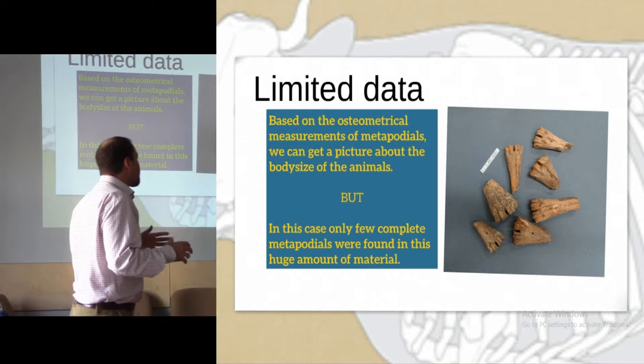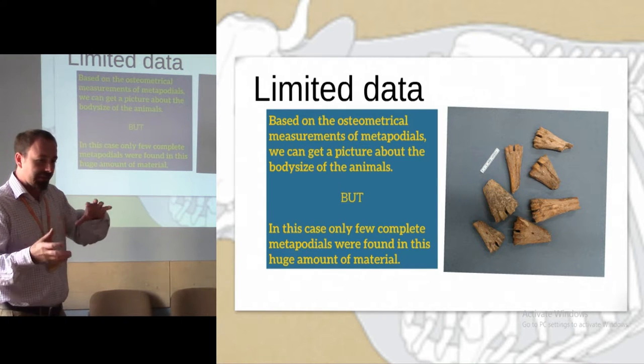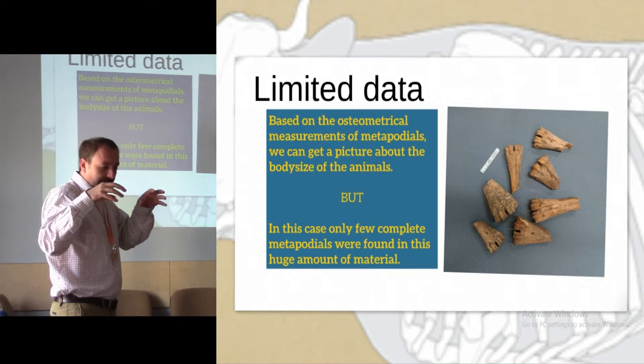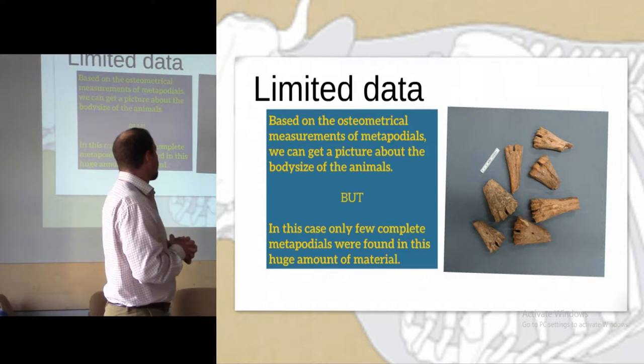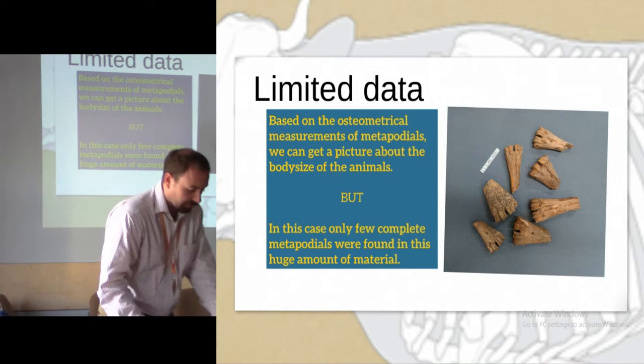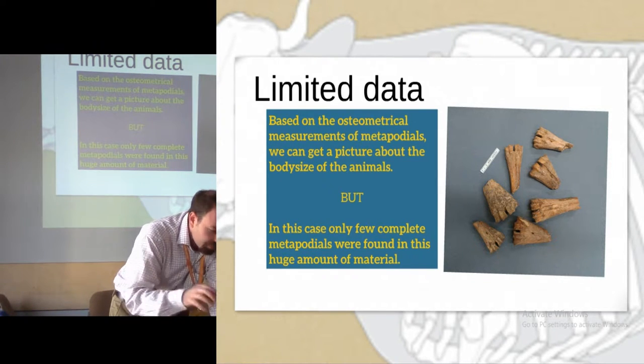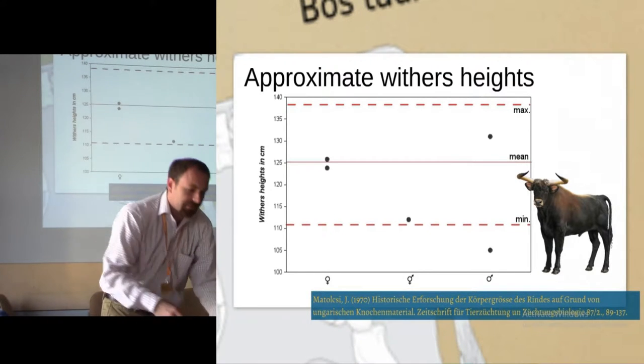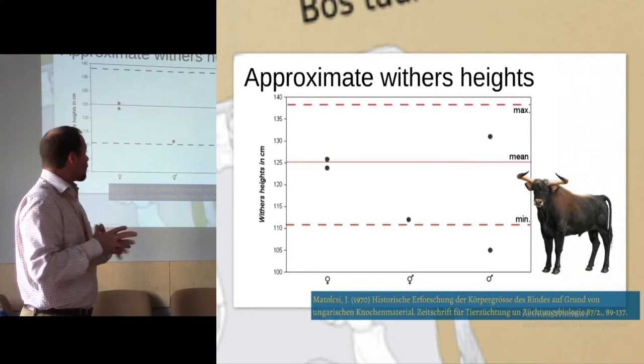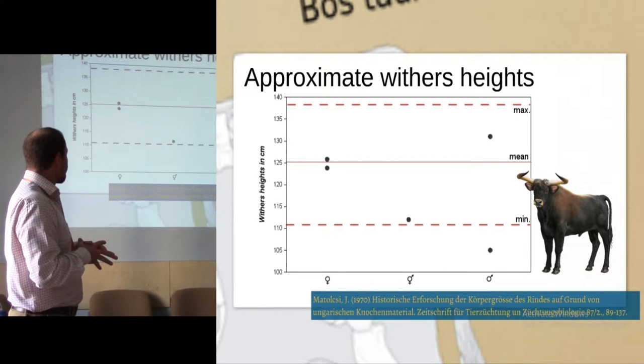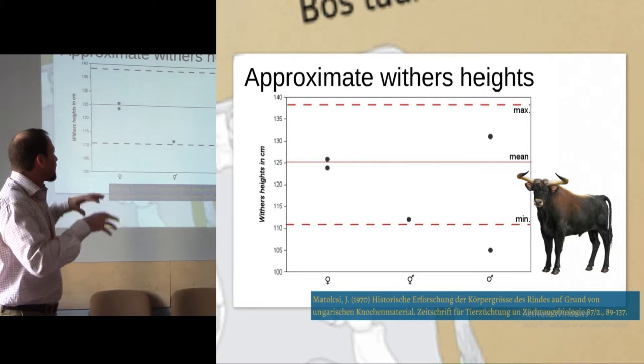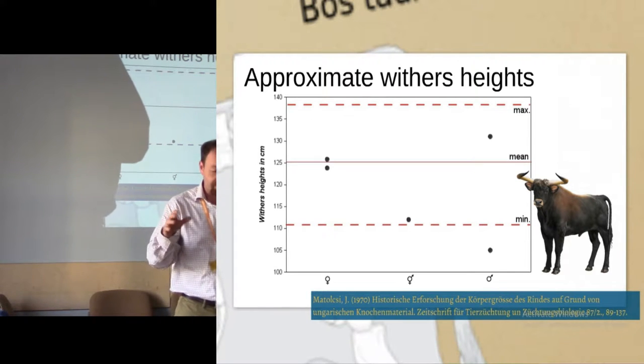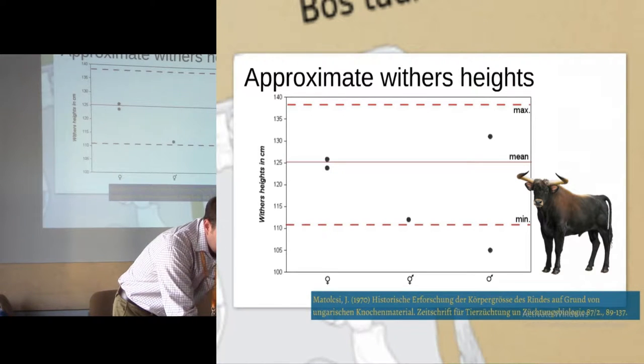But in this case, from a huge sample, because I prepared a sample for this presentation of 20,000 pieces, only a few complete cattle metapodials were observed. In this huge amount of material, it's very fragmented. I can only calculate the wither size five times, and this is more or less completely fitting the average of the periodical generality of cattle wither size.